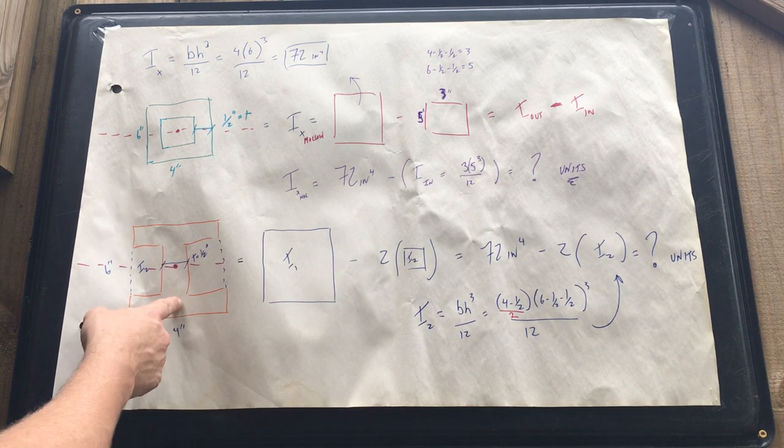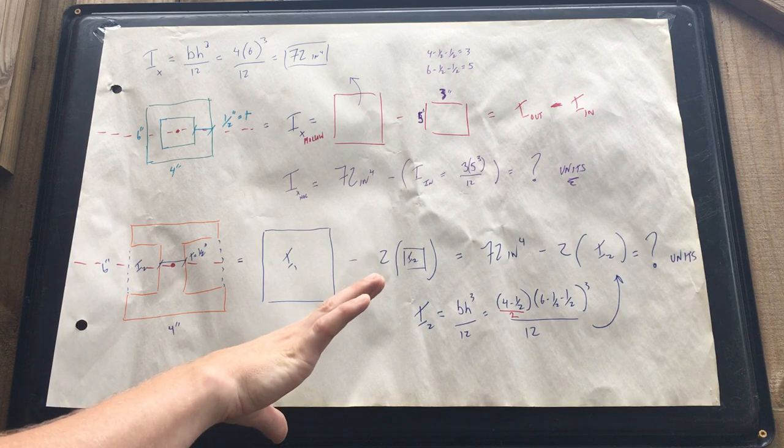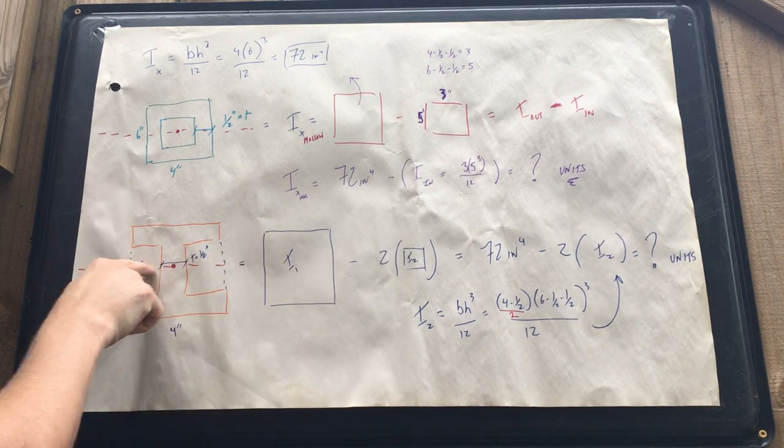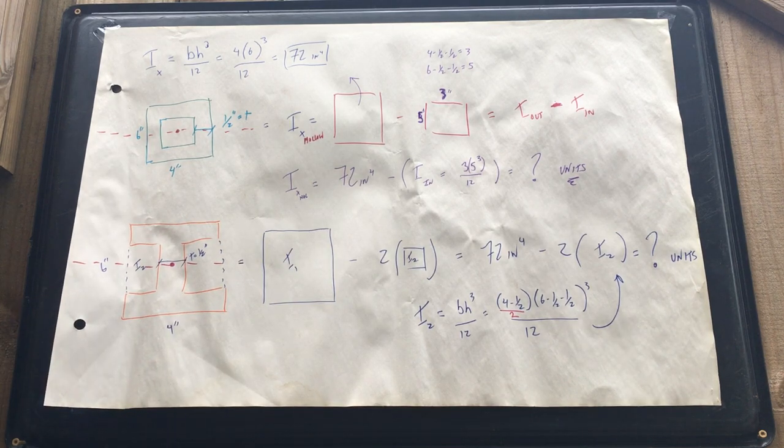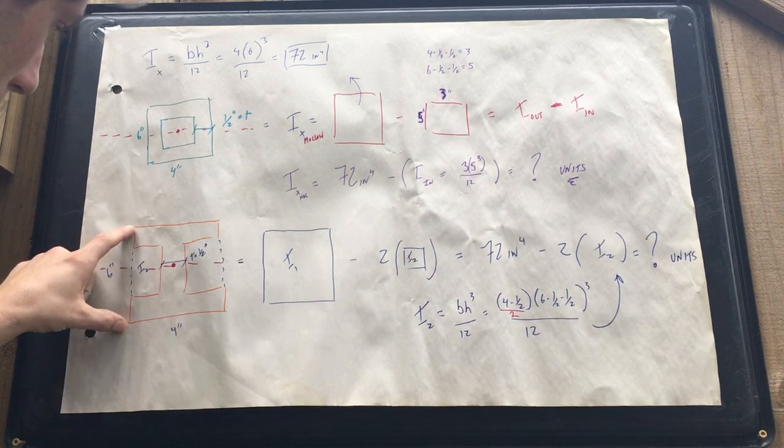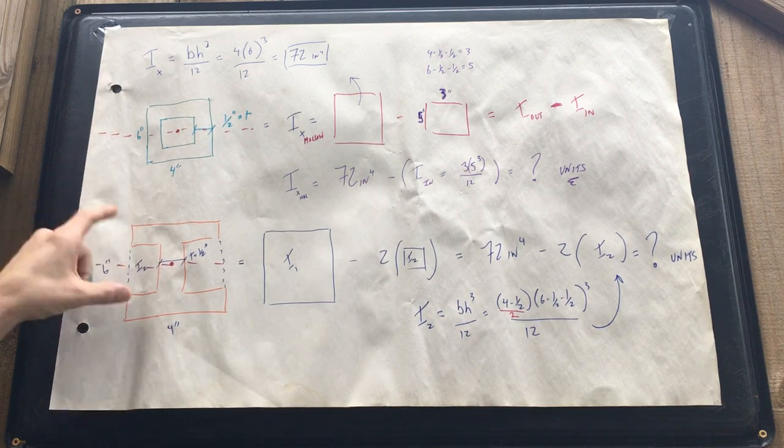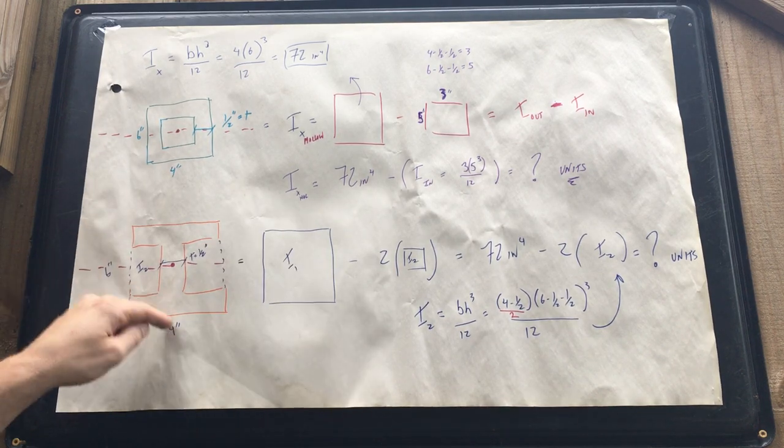Second to last beam type is gonna be your I-beam. We're gonna do the same thing we did before because the axis runs right through it, making it symmetrical on the x and y. We're gonna continue the same dimensions as we did before in terms of the outside.